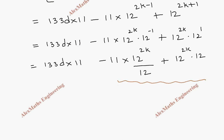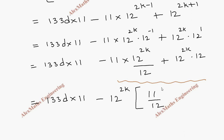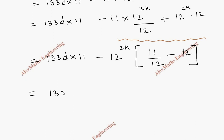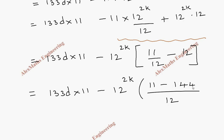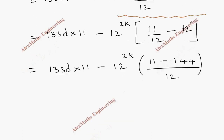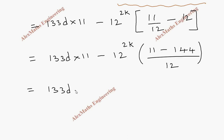Taking 12^(2k) as common from the last two terms, we get 133d × 11 + 12^(2k) × (−11/12 + 12). Taking LCM of 12: this gives 133d × 11 + 12^(2k) × (−11 + 144)/12, which is 133d × 11 + 12^(2k) × 133/12.